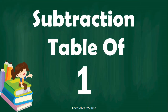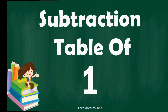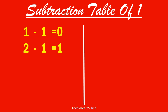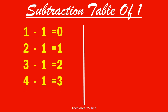Subtraction table of 1. 1 minus 1 equals 0. 2 minus 1 equals 1. 3 minus 1 equals 2. 4 minus 1 equals 3. 5 minus 1 equals 4.